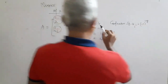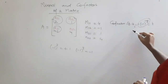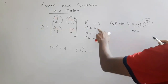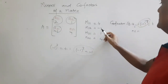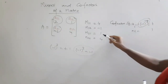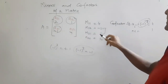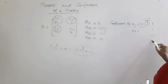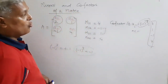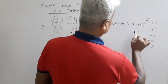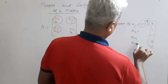So the cofactor of A11 is just 4, because the power is positive. For C12, the power 1+2=3 is odd, so the sign changes: the minor was minus 1, which becomes plus 1. For C21 similarly the sign changes. And C22 remains 4. So these elements — 4, 1, minus 1, 4 — are the cofactors of A11, A12, A21, and A22.